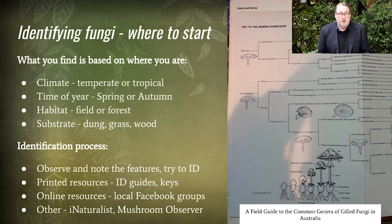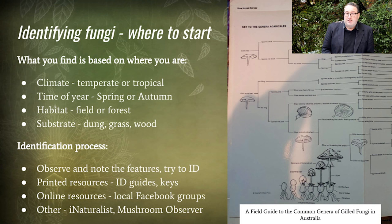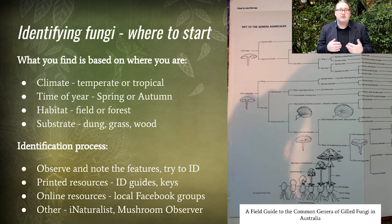There are also lots of really good online resources. So there are local Facebook groups — try to join a Facebook group that's local to your region, not just your country but to your more specific area. So if you're in Victoria, join the Victorian Fungi Group; in Tasmania, join a Tasmanian Fungi Group. There's also the iNaturalist website or app, where you can take photographs, upload them, and other people interested in fungi can identify your fungi for you.